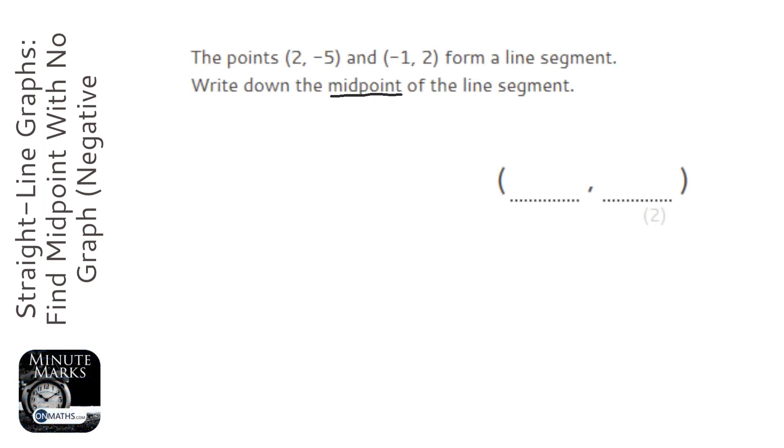We're asked to find the midpoint, which is the halfway point, and we're given two coordinates at the start and end of the line segment. A really easy way of doing this is finding the average of the x coordinates and the average of the y coordinates.